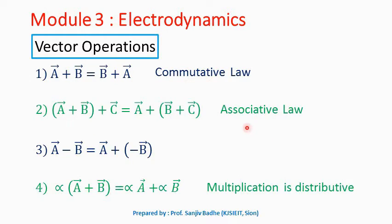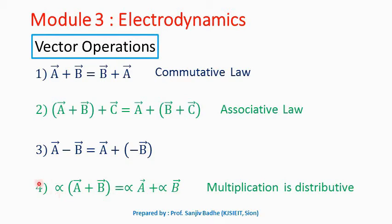Vector addition obeys the associative law: a bar plus b bar plus c bar equals a bar plus b bar plus c bar. So it does not matter how we group the vectors while adding them. Also, a bar minus b bar can be written as a bar plus minus b bar. And alpha into a bar plus b bar is equal to alpha a bar plus alpha b bar — so multiplication is distributive. Here alpha is a scalar.